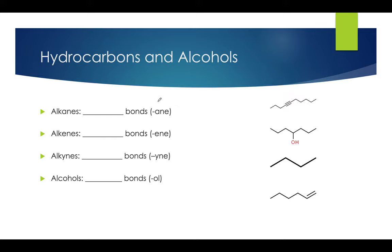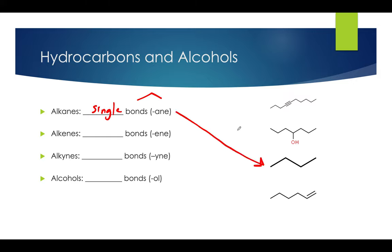Let's start off with alkanes. Alkanes are molecules that consist of carbon chains with exclusively single bonds. They're the simplest kinds of molecules we work with in organic chemistry. This molecule right here is an example of an alkane — it's called butane.